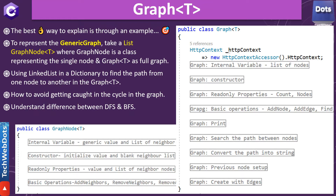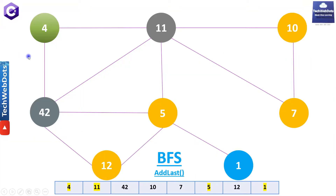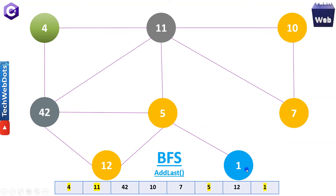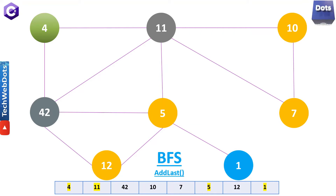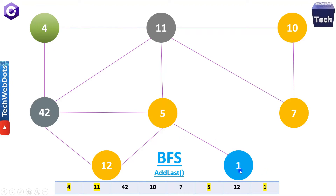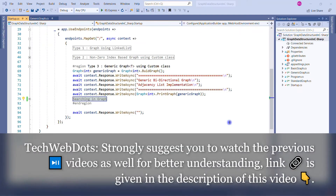I strongly believe in practical examples, so let me jump into Visual Studio to demonstrate. This is the graph we are using in this example: node 4, and there are nodes 11, 42, 5, 12, 10, 7, and 1. The path we are going to use is from 4 to 1 — how we can reach it and what the result will be using depth-first search versus breadth-first search.